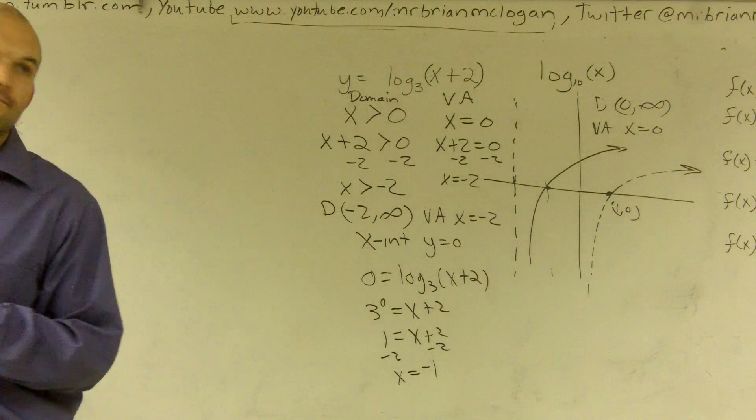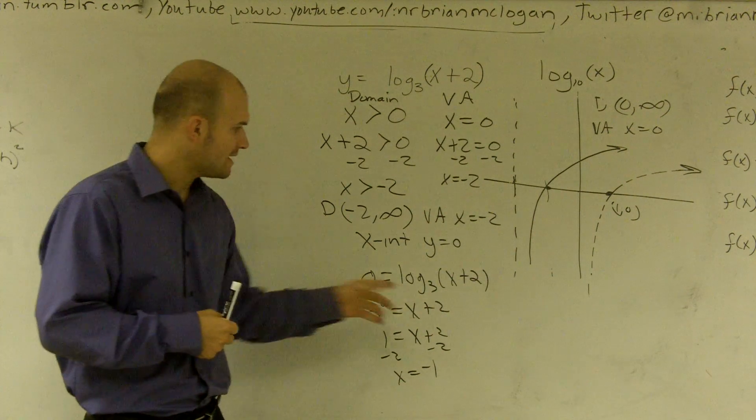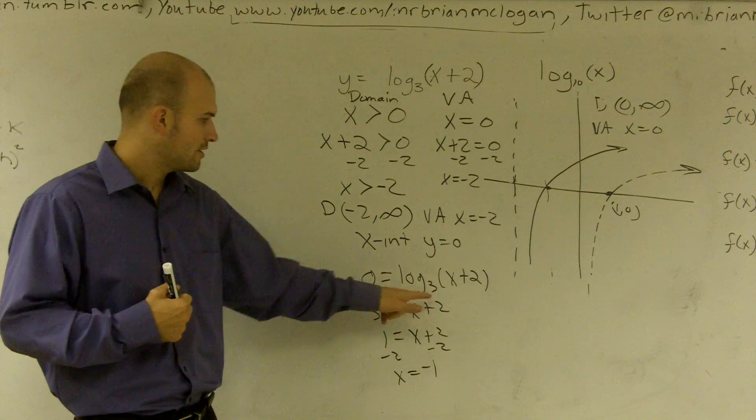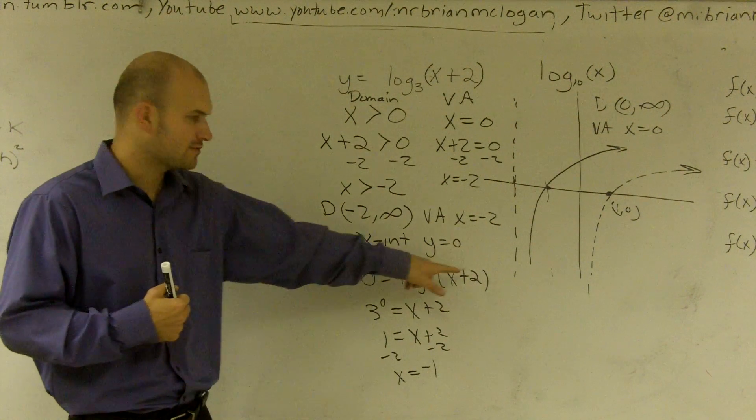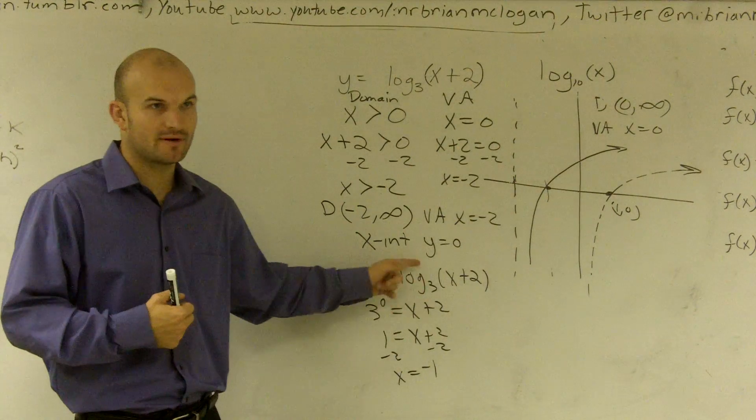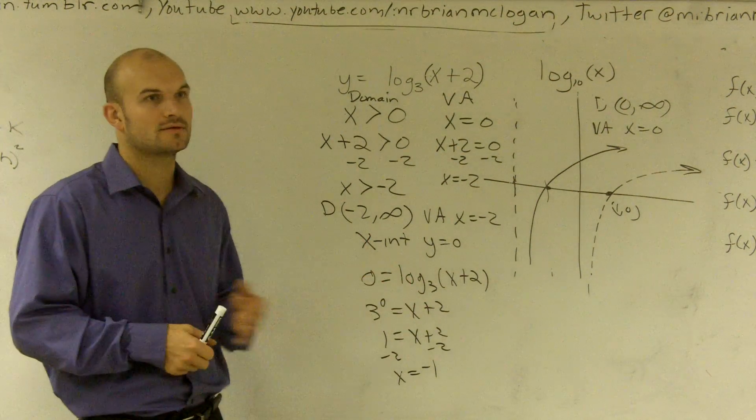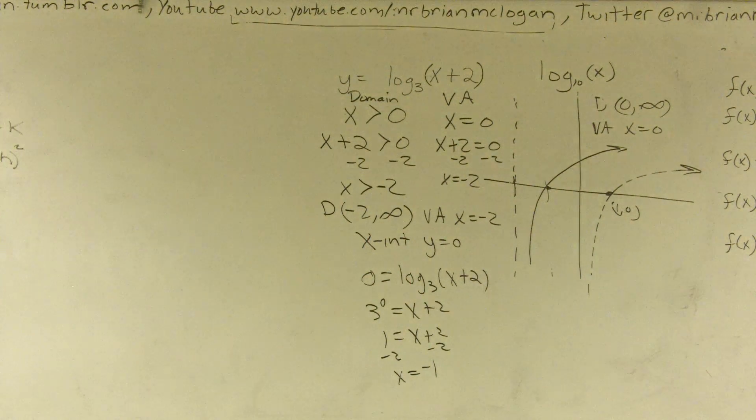Why did you move the 3 to the other side? I didn't move the 3 to the other side. I transferred this to exponential form. 3 raised to the 0 equals x plus 2. That is what we did, remember, in our warm-up. Transferred this to this. That's what we practiced today in the morning, right when we started class. That's all we did.